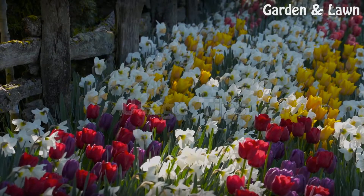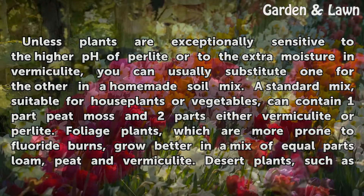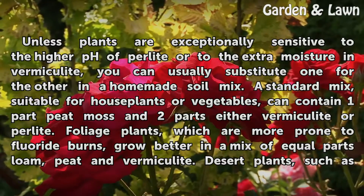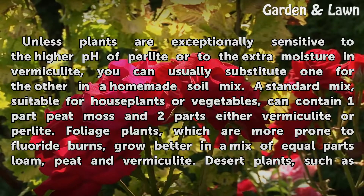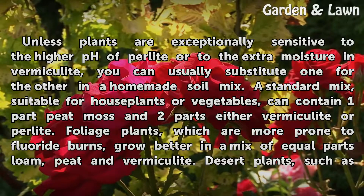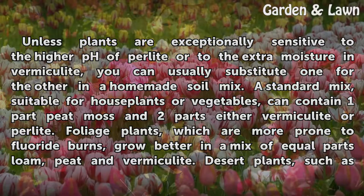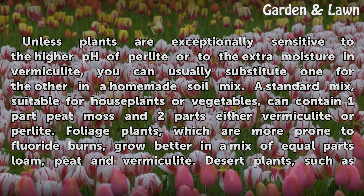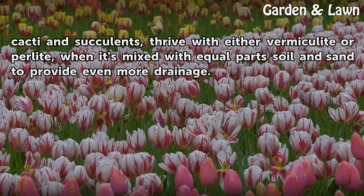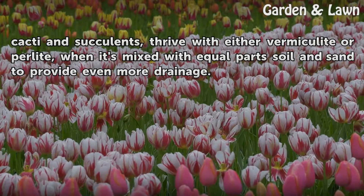Usage tips: unless plants are exceptionally sensitive to the higher pH of perlite or to the extra moisture in vermiculite, you can usually substitute one for the other in a homemade soil mix. A standard mix suitable for houseplants or vegetables can contain one part peat moss and two parts either vermiculite or perlite. Foliage plants, which are more prone to fluoride burns, grow better in a mix of equal parts loam, peat, and vermiculite. Desert plants such as cacti and succulents thrive with either vermiculite or perlite when mixed with equal parts soil and sand to provide even more drainage.